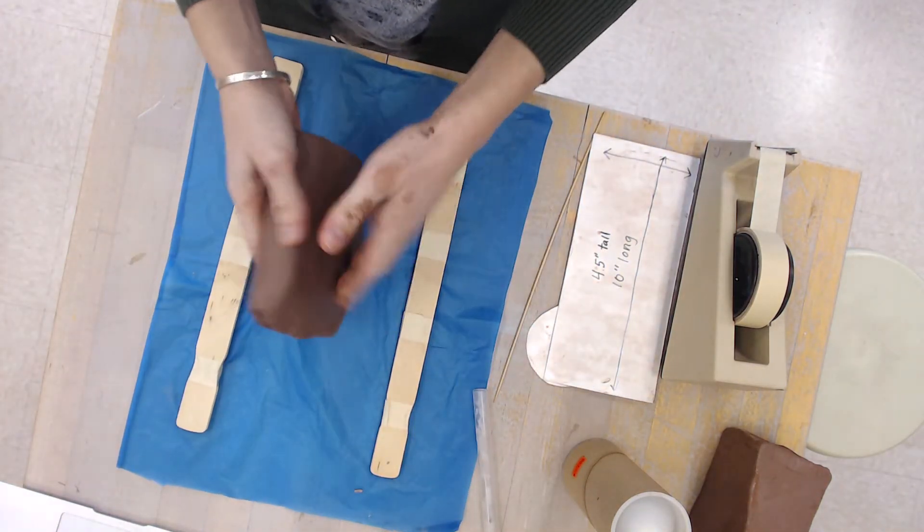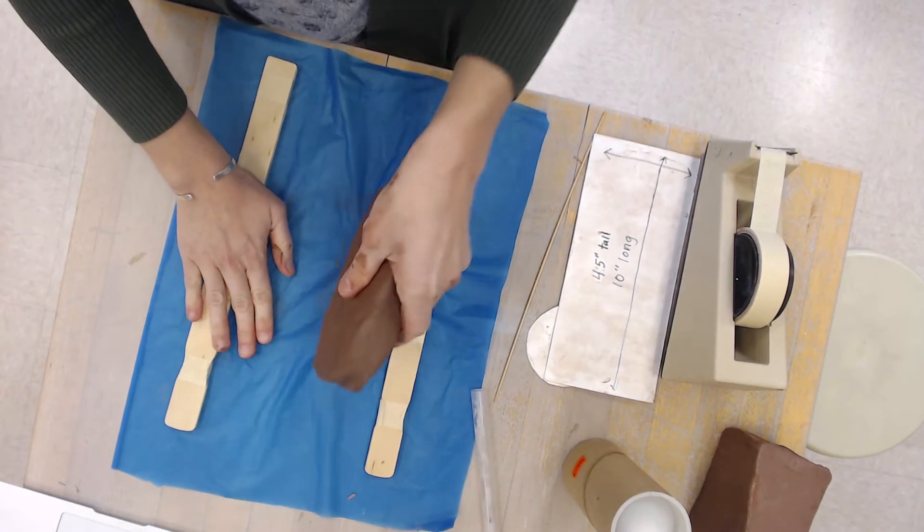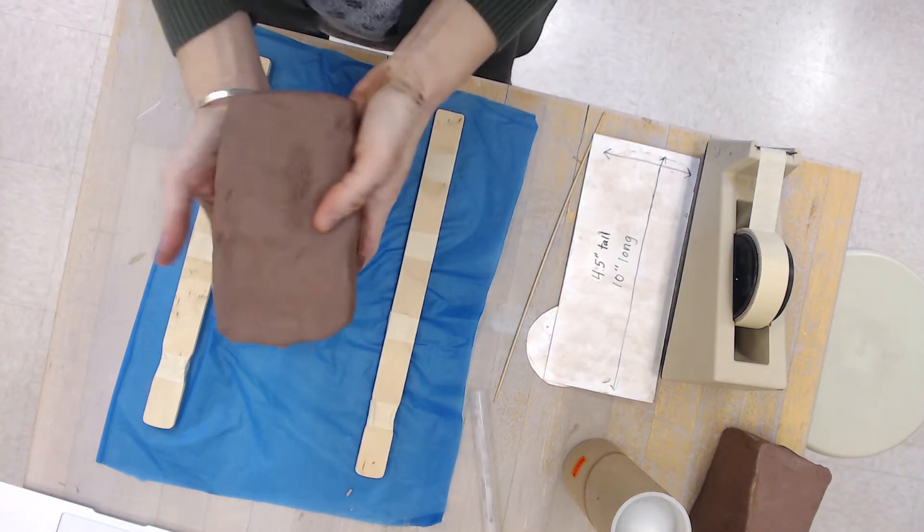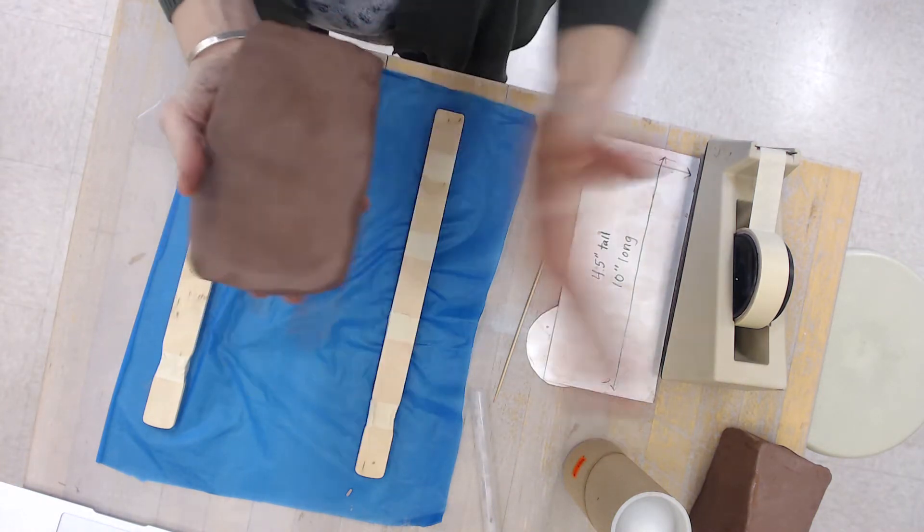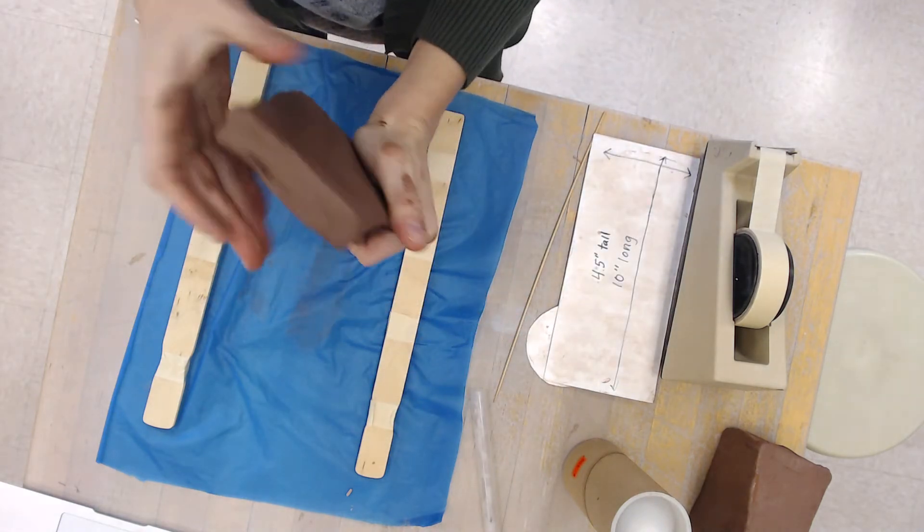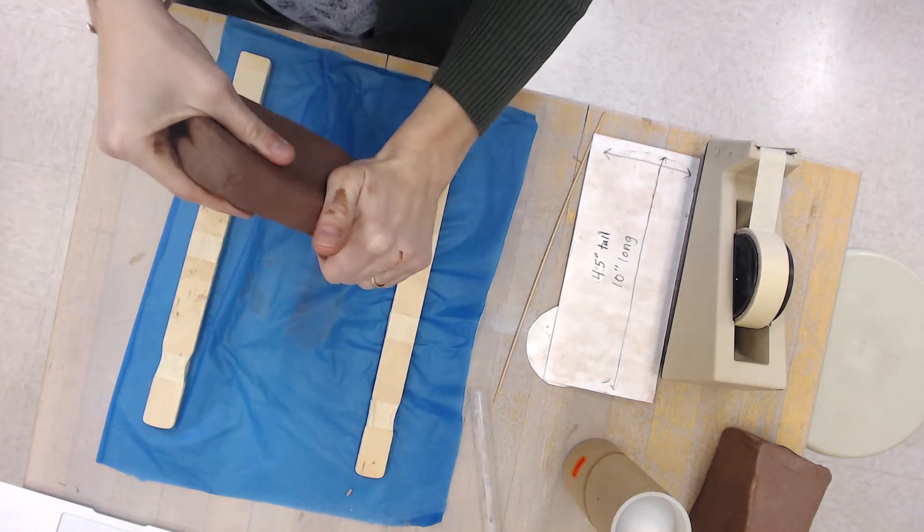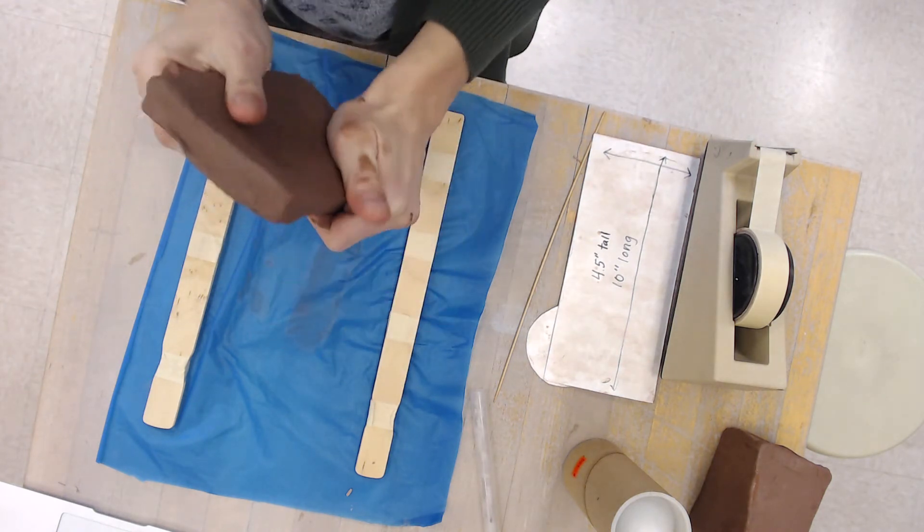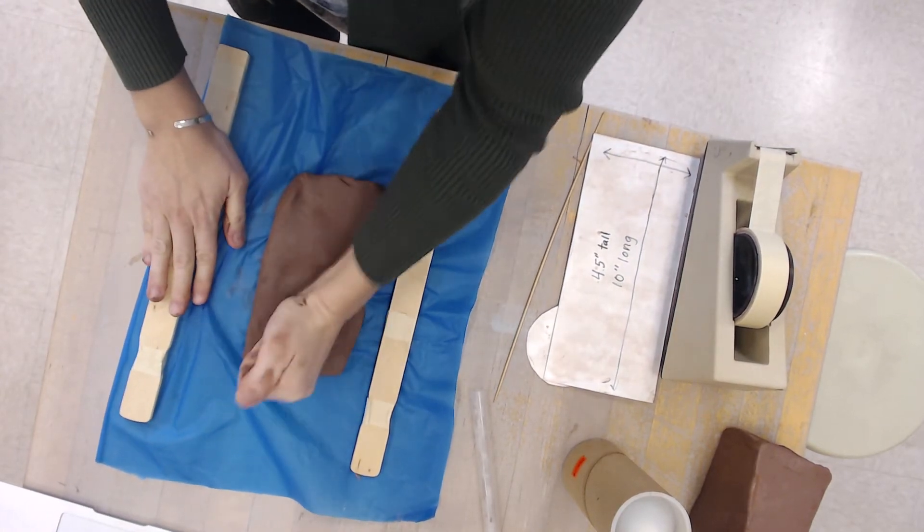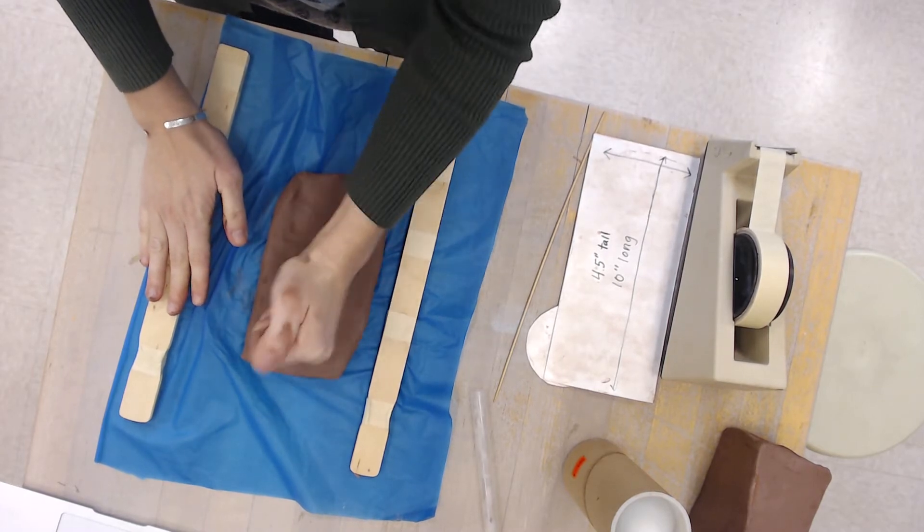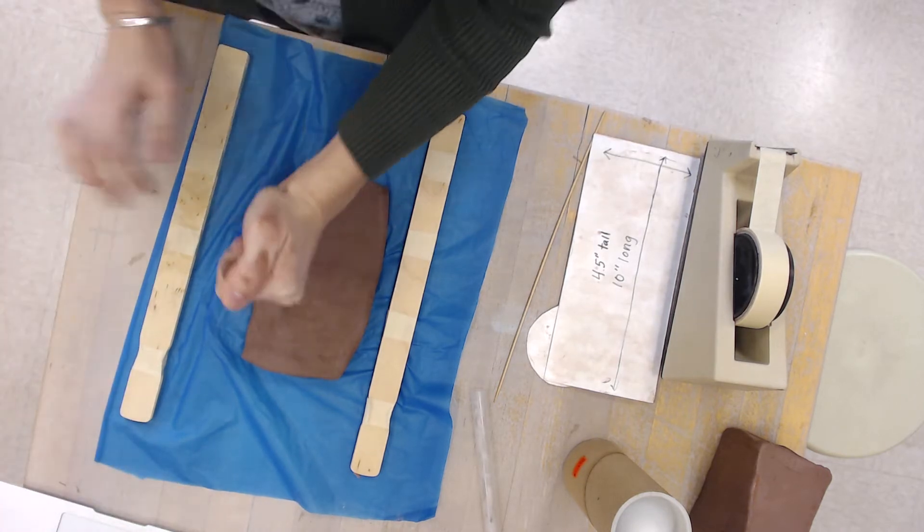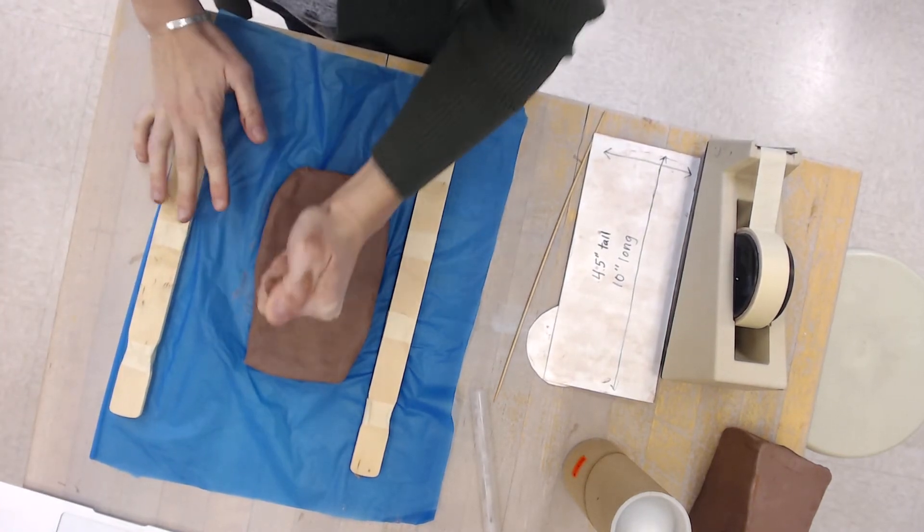So when I'm preparing this clay to be rolled out, what I want to do is kind of pound it with my hand to get a long kind of flat shape. It's like a brick shape. You want to have to do the least amount of rolling as possible because you're not using a real rolling pin here. And I'm pounding it with my fist to kind of flatten it out a little bit further.